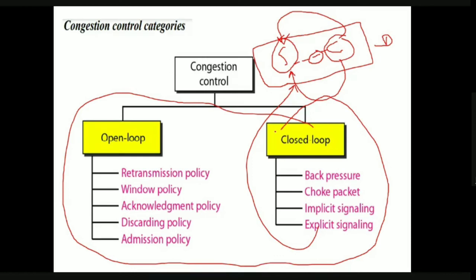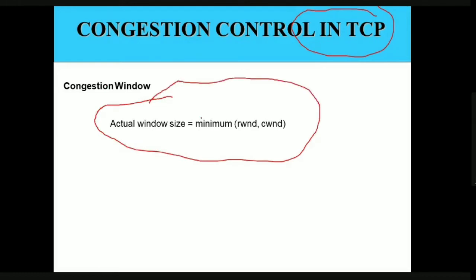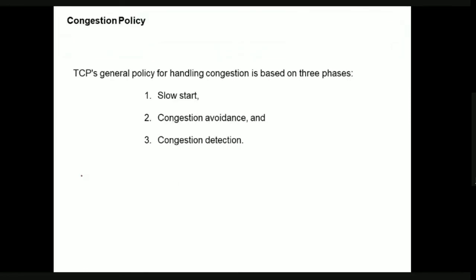Now we discuss congestion control in TCP. The actual window size is the minimum of the receiver window size and the congestion window size. TCP handles congestion in three phases: slow start, congestion avoidance, and congestion detection.